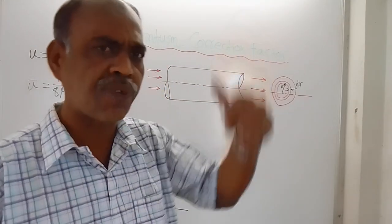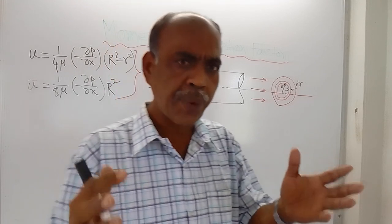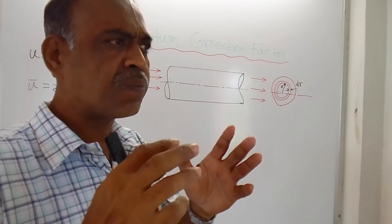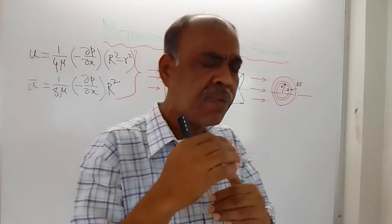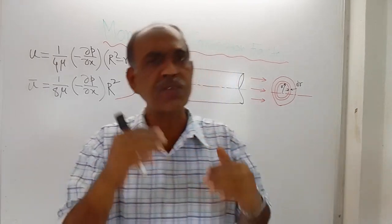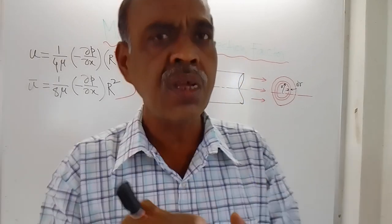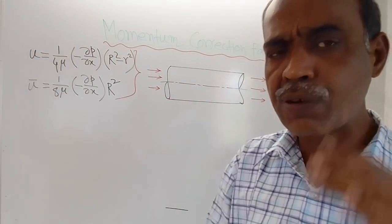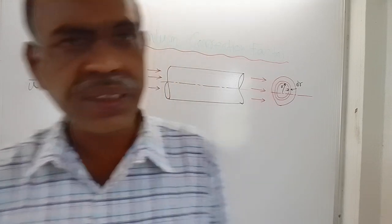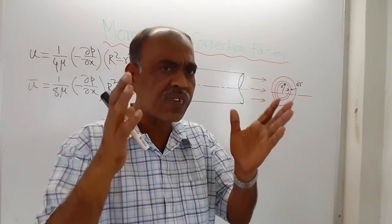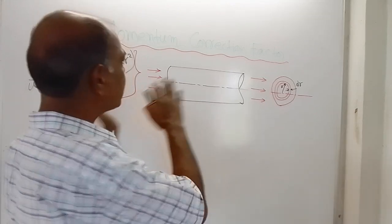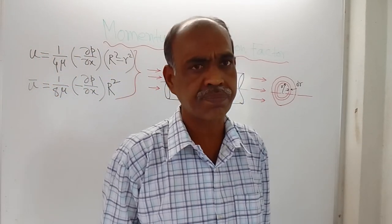Average velocity is not the actual velocity. Across the cross section there is variation of velocity, and the nature of that variation is parabolic. To avoid the error introduced by using average velocity, there is a fixed ratio between the actual momentum and the momentum based on average velocity. That ratio gives a fixed numerical value — the momentum correction factor.